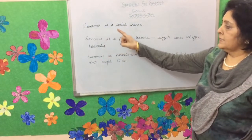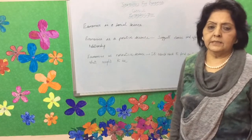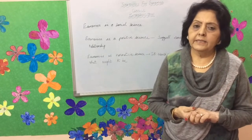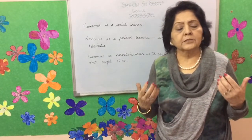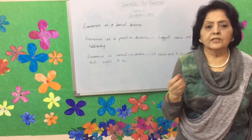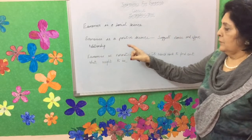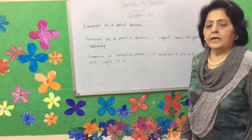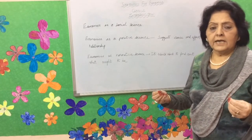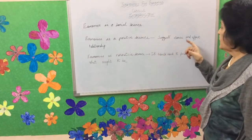Economics is a social science. It deals with human beings and expects human beings to be rational. But at times, human beings behave irrationally as they are emotional, and in such cases the laws of economics will not operate. Economics as a positive science tells us what the figures are and suggests cause and effect relationships in the society.